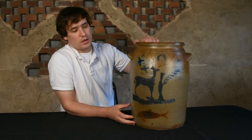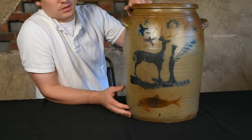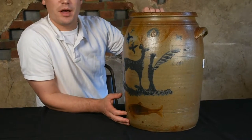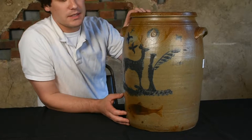This is a six gallon jar made by David Greenland Thompson at the Thompson Pottery in Morgantown, West Virginia, about 1860.